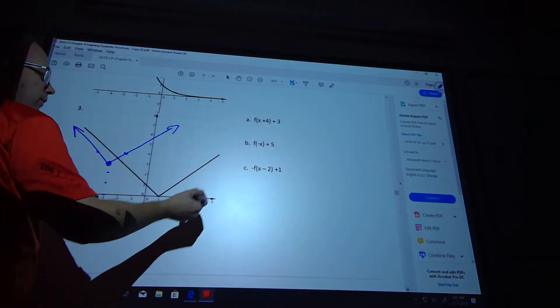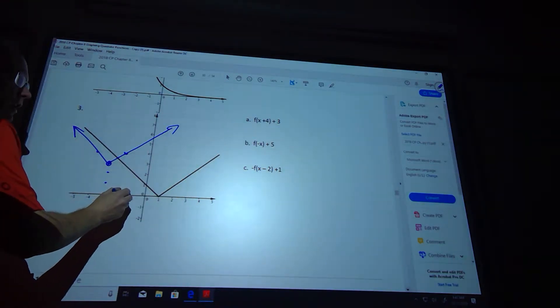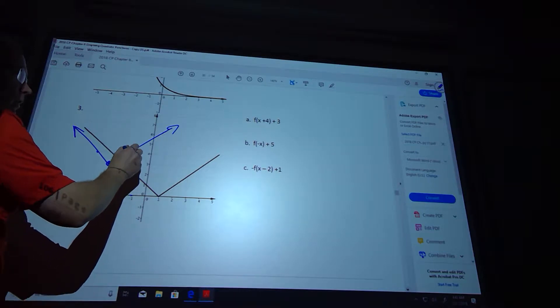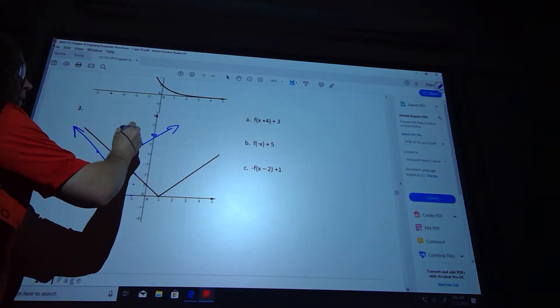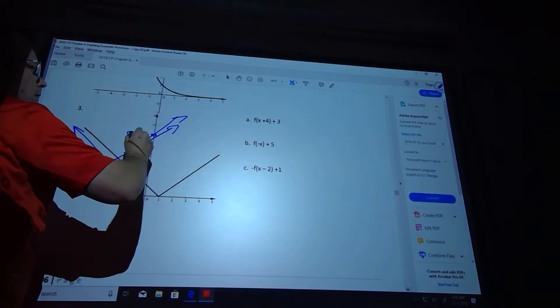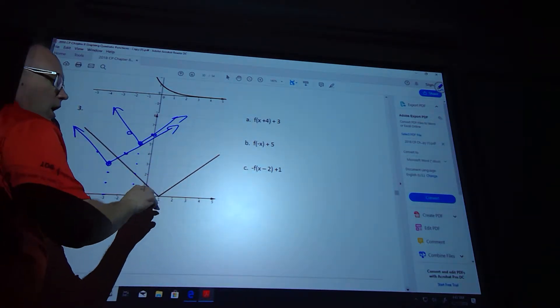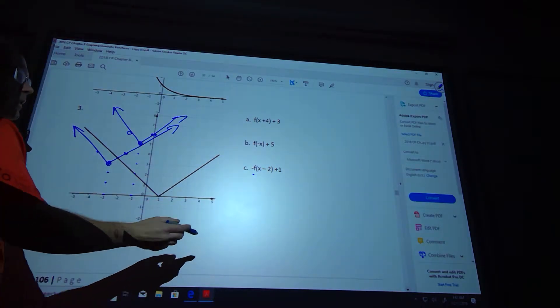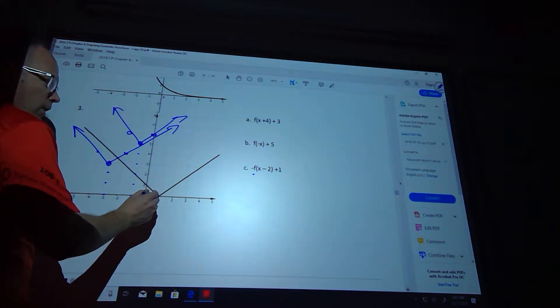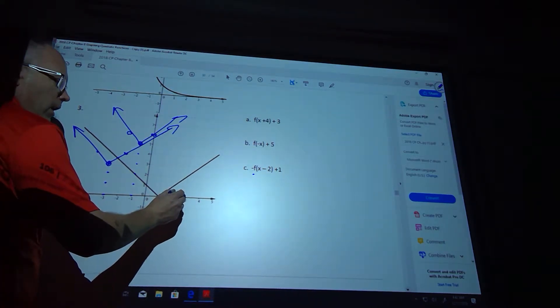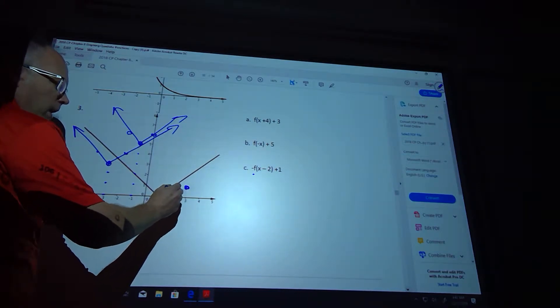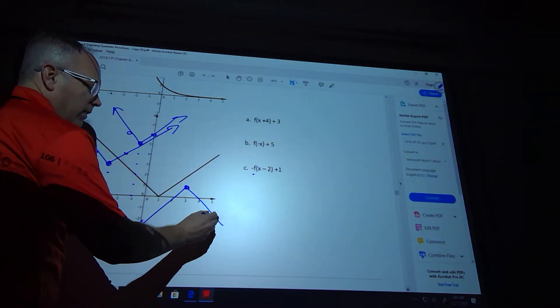This one is going to flip it over the y-axis to here and then go up 5. And then this one is going to flip it over the x-axis because of the negative out front. And then I'm going to go right 2 and up 1. So this one actually opens upside down because of that negative out front.